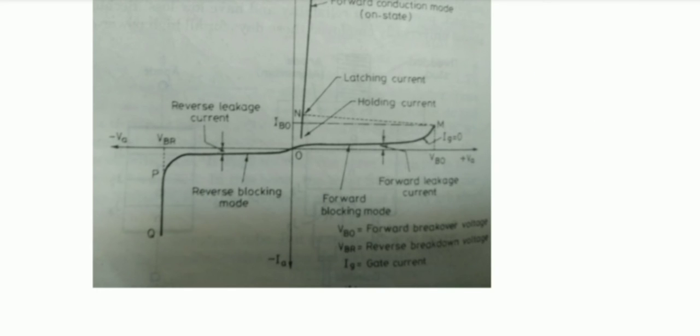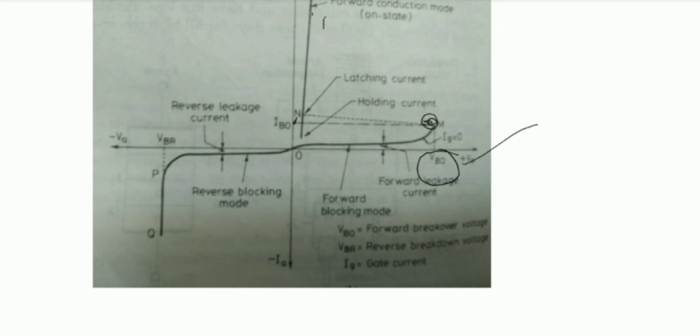In the forward conduction mode, when the anode-to-cathode forward voltage is increased with the gate circuit open, the reverse-biased junction J2 undergoes avalanche breakdown at a voltage called the forward breakover voltage VBO. After this breakdown, the thyristor turns ON and the operating point shifts from point M to point N, then to anywhere between N and K, which represents the forward conduction mode.